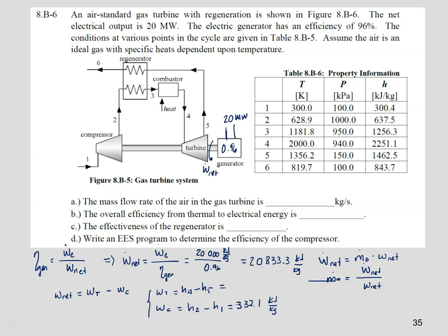The turbine work is h4, which is 2251.1, minus h5, which is 1462.5 — giving 788.6 kilojoules per kilogram. Doing the subtraction, the net work is 788.6 minus 337.1, which equals 451.5 kilojoules per kilogram.